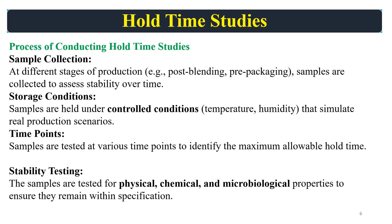The process of conducting hold time studies: samples are collected at different stages of production and held under controlled conditions. The conditions mimic the actual production storage conditions. Time points are then assigned — samples are tested at various time points to identify the maximum allowable hold time. For example, if you want to study the hold time of granules or lubricated blend for 30 days, you can hold the sample and study it at intervals within those 30 days, such as after 8 days, 15 days, 21 days, and at the final point, 30 days.